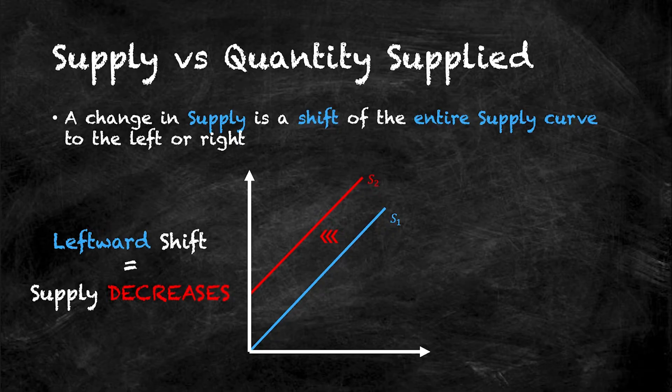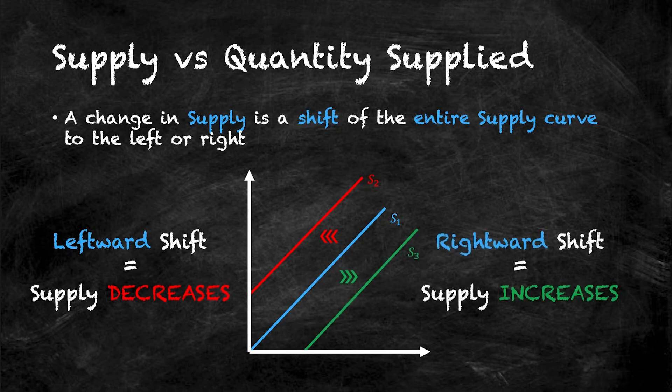On the other hand, a rightward shift of the entire S1 curve means that supply increases. That is, supply increases from S1 to S3.